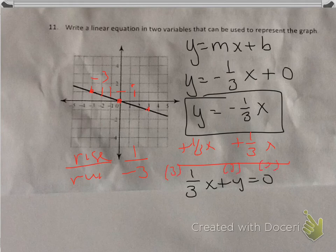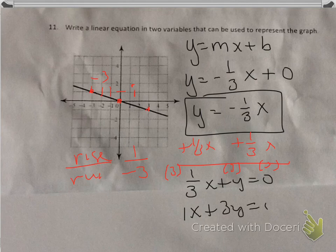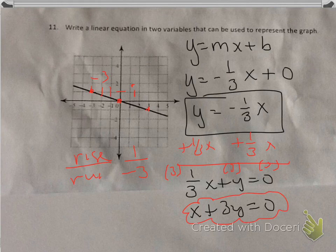And when I did, I'd end up with one x plus three y equals zero. And we really don't need the one. So I could just erase it and just put x plus three y equals zero. And so this is my two equations that I could use.